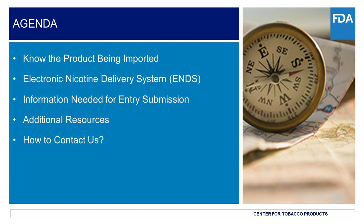Products that meet the definition of a tobacco product are regulated by FDA. Electronic Nicotine Delivery System, or ENDS. In this section, we will take a deeper look at ENDS products. Specifically, we will cover some examples of ENDS products, discuss the pre-market authorization requirements for ENDS products, and current FDA enforcement priorities for ENDS products.